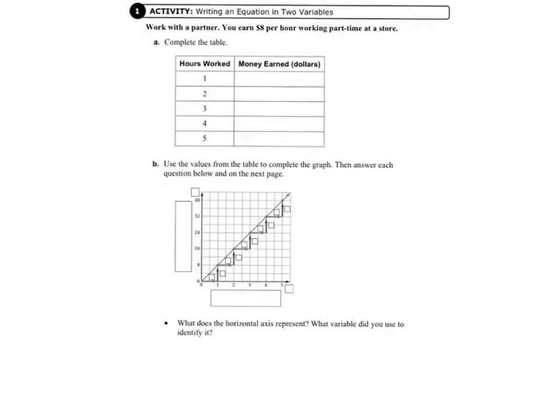Today we're going to start on page 163 in your record and practice journal. Activity 1, Writing an Equation in Two Variables. You earn $8 per hour working part-time at a store.